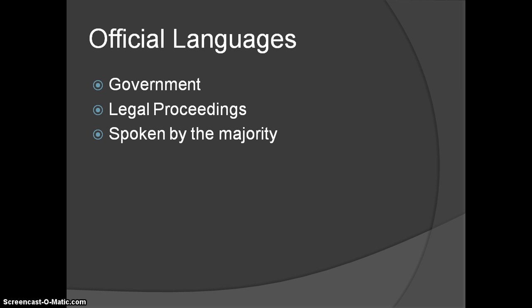An official language might create tension within a state, especially if there's an ethnic minority that speaks a different language. In the United States, there have been efforts to make English the official language, and Spanish-speaking individuals of Hispanic descent might feel left out of society if English becomes official. That could definitely cause strife within the country.